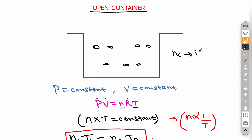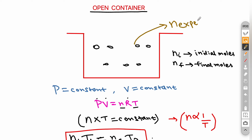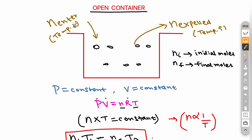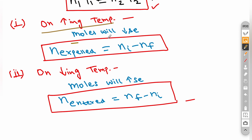Here is our open container with initial moles n_i and final moles n_f. Moles are expelled when temperature is increased, and moles enter the container when temperature is decreased. The formula for moles expelled is initial moles minus final moles; for moles entered, it is final moles minus initial moles. On increasing temperature moles decrease, and on decreasing temperature moles increase.